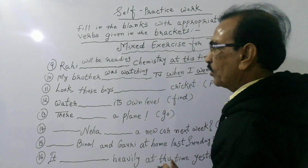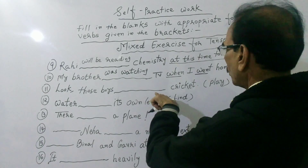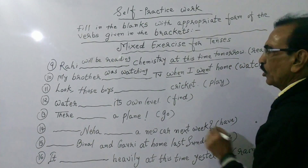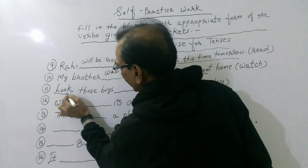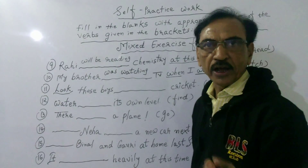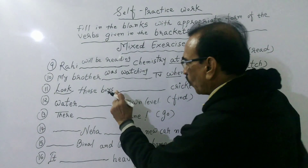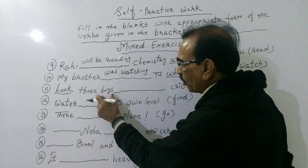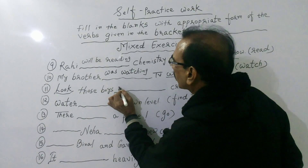Sentence eleven: Look! Those boys dashed cricket. The word 'look' indicates continuous present tense, and the formula is am/is/are plus verb with -ing. 'Boys' is plural, so we use 'are'. The correct answer is: Those boys are playing cricket.